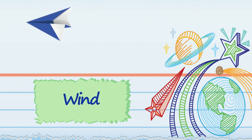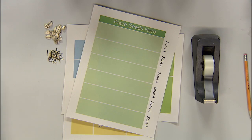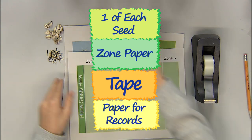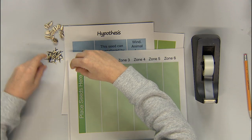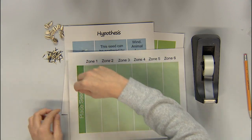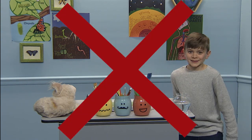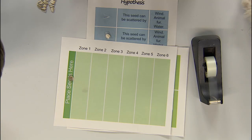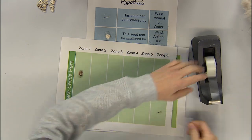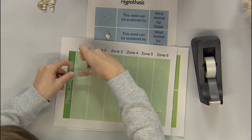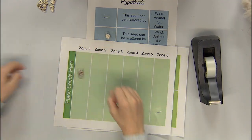Experiment one: wind. For this, you will need one of each seed, a zone paper, tape, and your results paper. First, put both seeds in the start zone. Now blow on the seeds, but not too hard. Blow gently and see if the seeds move. We've got some traveling seeds! To record the results, tape the seeds to where they landed on the paper. The seeds that were moved were scattered by wind. That marigold seed went farther than I thought it would.